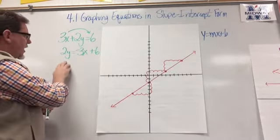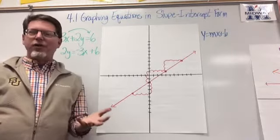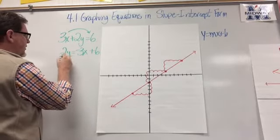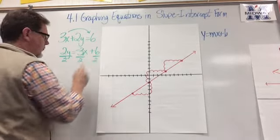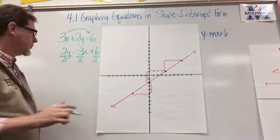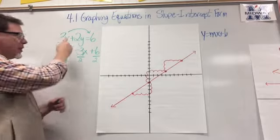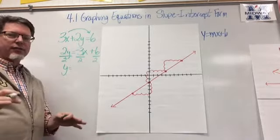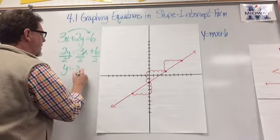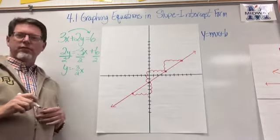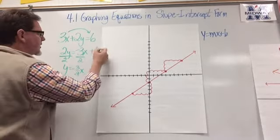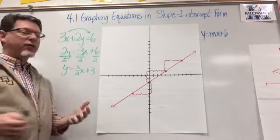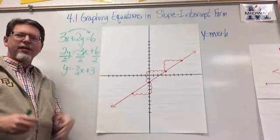Now that I have 2y equals negative 3x plus 6, I need to get y by itself, so I divide everything by 2 on both sides. 2y divided by 2 is y. I leave negative 3 over 2 as a fraction — not a decimal — because I need a rise and a run in order to graph. And 6 divided by 2 is 3, so I have y equals negative 3/2 x plus 3 — now in slope-intercept form.